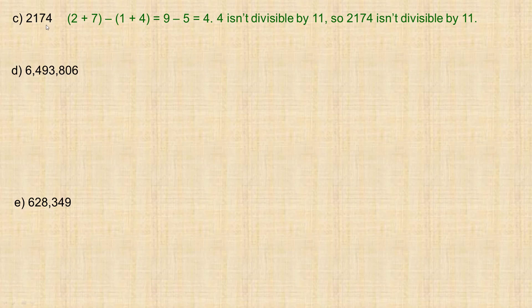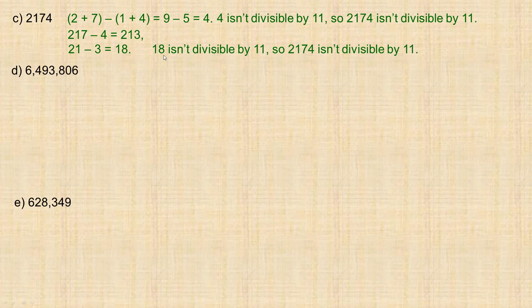Using the second method on 2174: take the 4 off and subtract from 217 to get 213. That's probably too large to assess directly, so take the 3 off and subtract from 21 to get 18. Since 18 is not divisible by 11, 2174 is not divisible by 11.